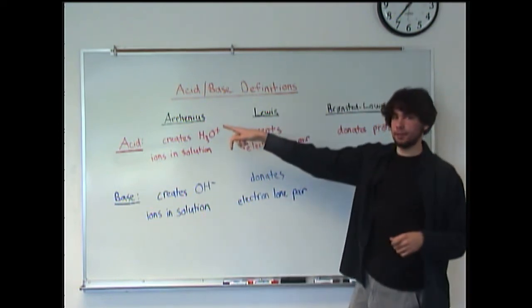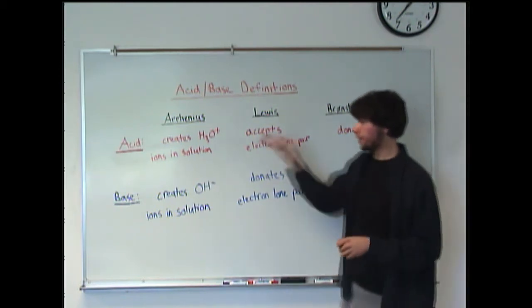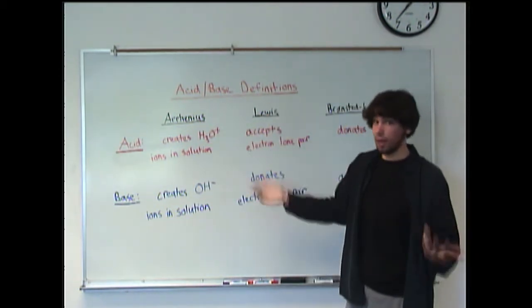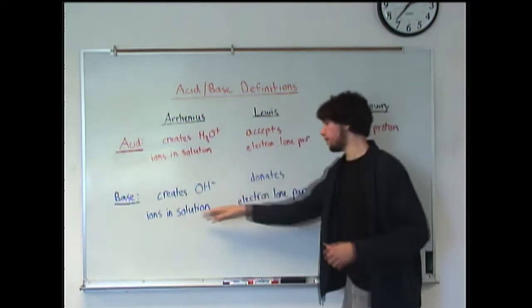You have the Arrhenius definition, the Lewis definition, and the Bronsted-Lowry definition. Now I've color coded this to make it a little bit easier. You might want to write these down. The acid definitions are in red and the base definitions are in blue.